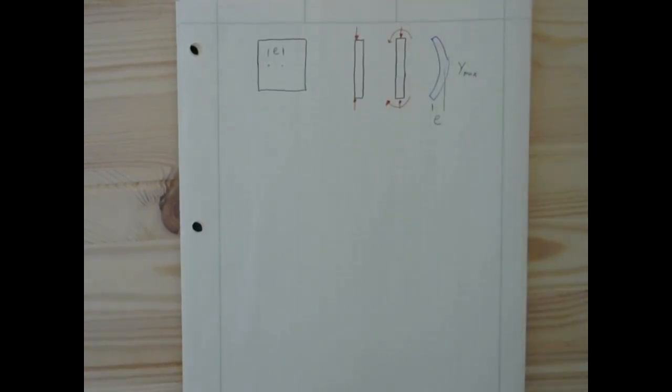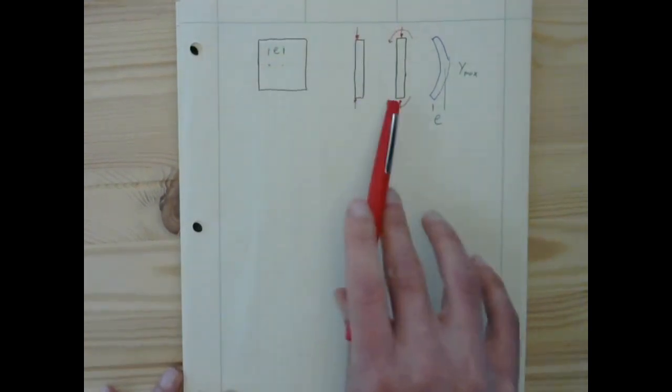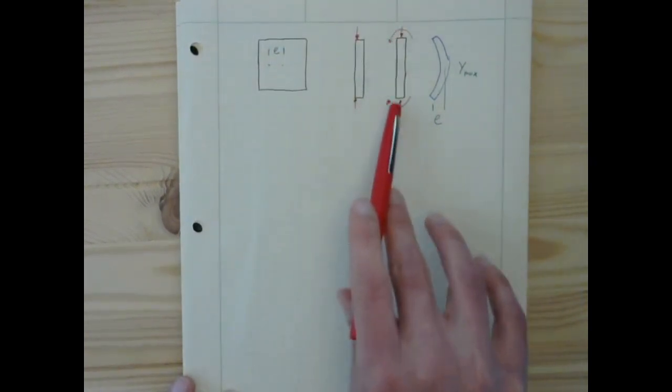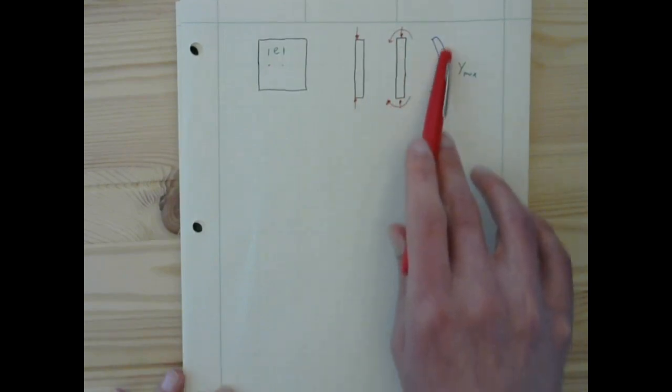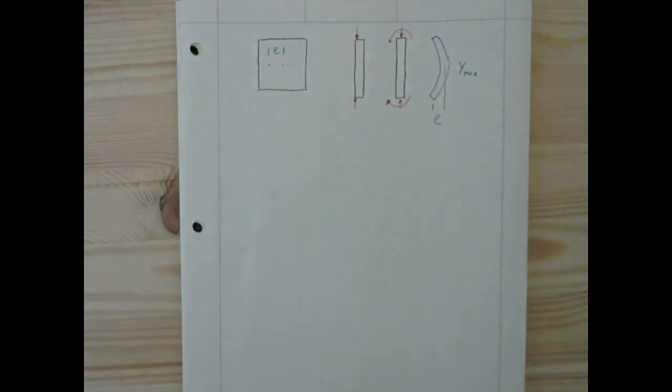So whether we start with it applied non-perfectly at the centroid, or if we start with the column in some way deflected from perfectly straight prismatic, we're going to have some eccentricity, and that's going to introduce some deflection.